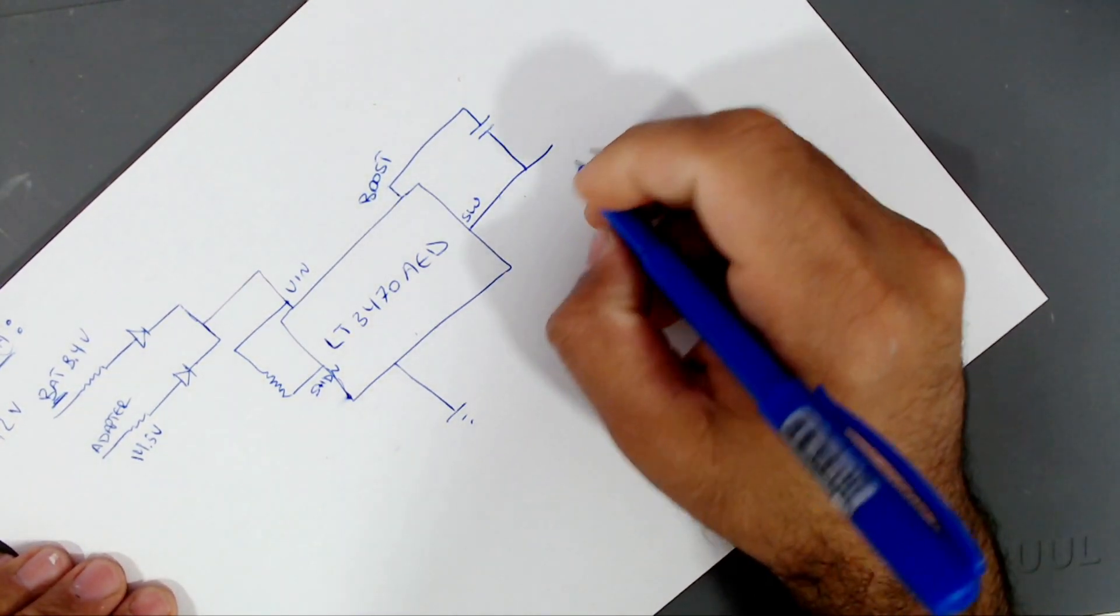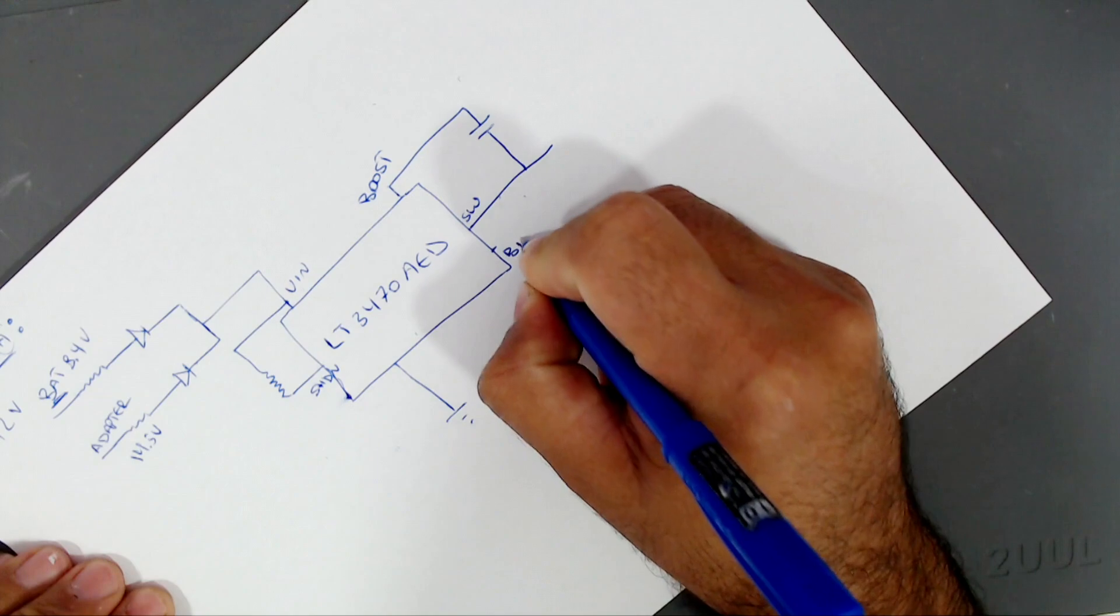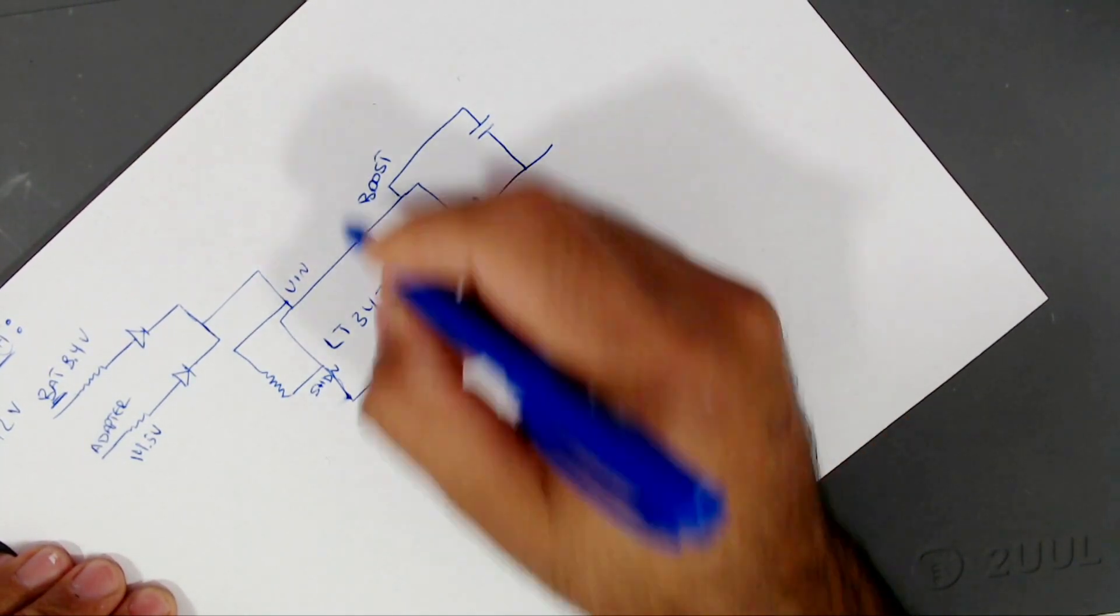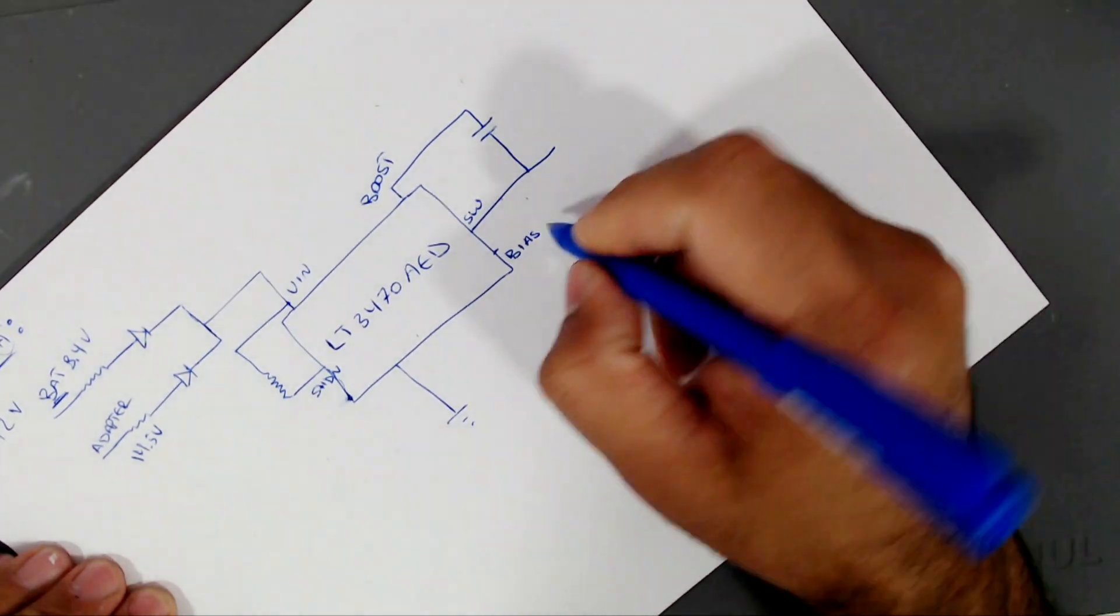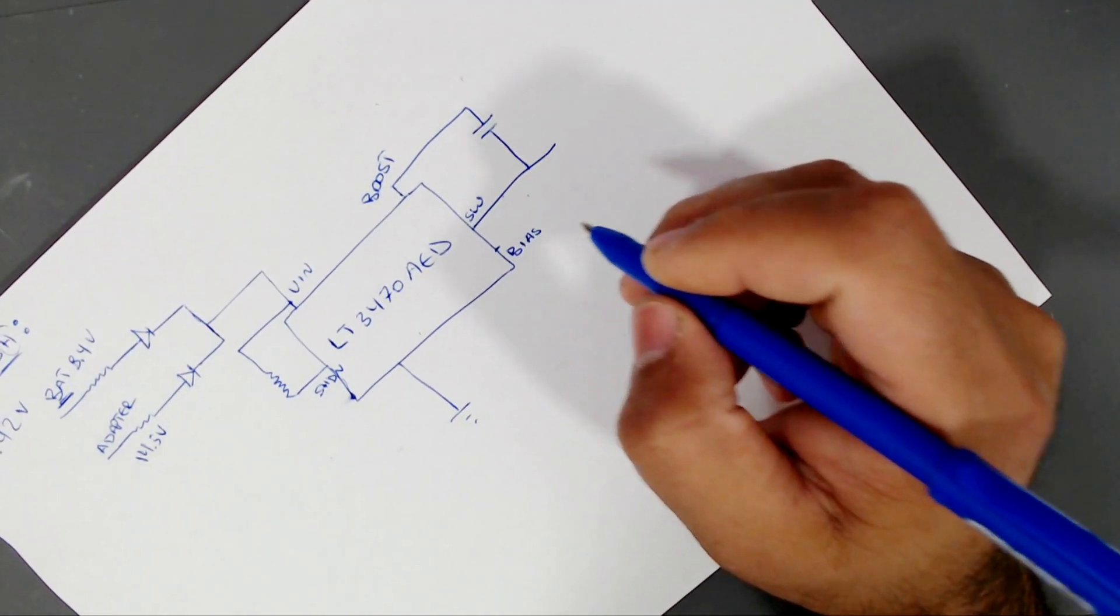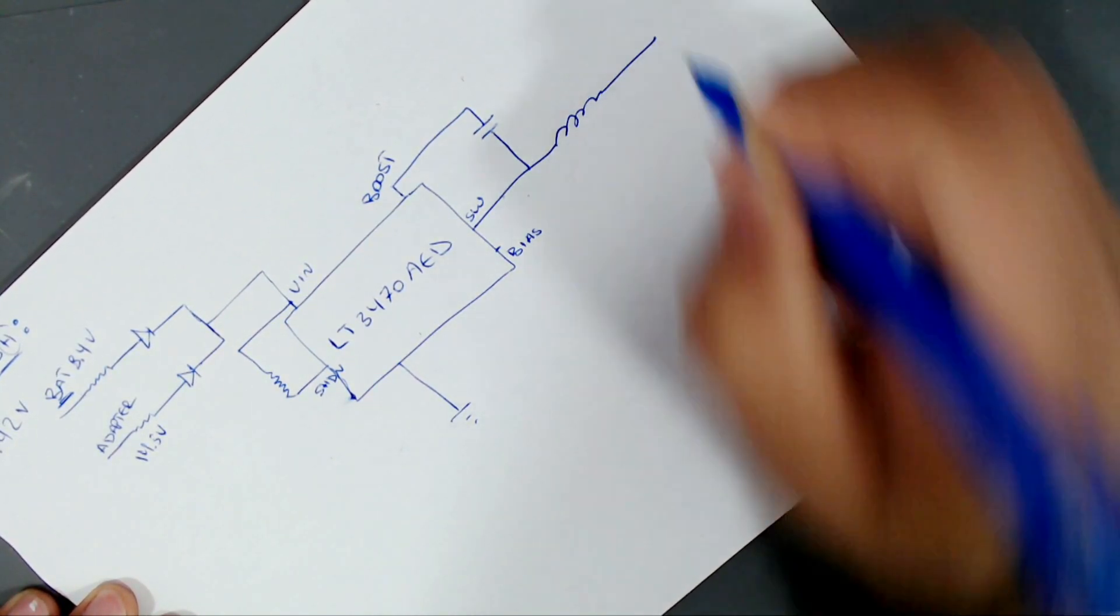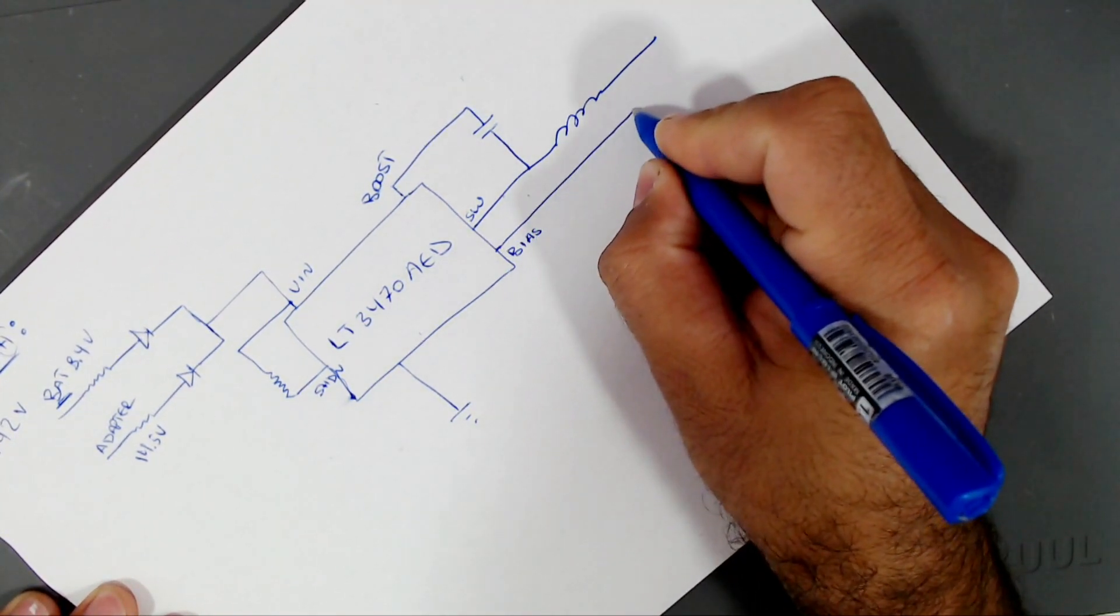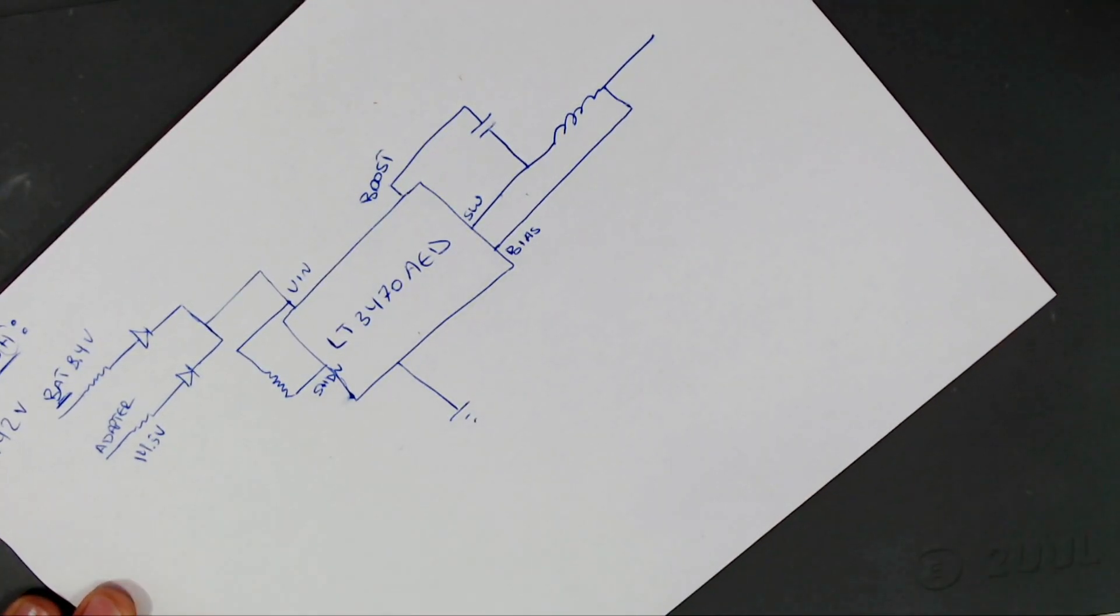There is another pin called BIAS pin. Also, this pin is connected to the boost pin, but through a Schottky diode inside this chip. But this one is connected after the inductor. There is an inductor here. So this pin is connected after the inductor and it's used to bias the internal regulator.